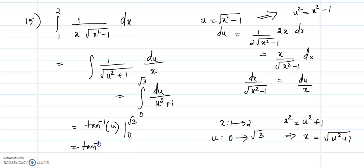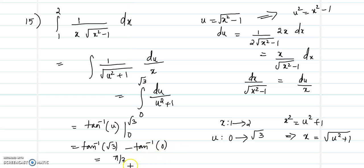That gives tan⁻¹(√3) minus tan⁻¹(0). Tan⁻¹(√3) = π/3 and tan⁻¹(0) = 0. Therefore, the integral value will be π/3.